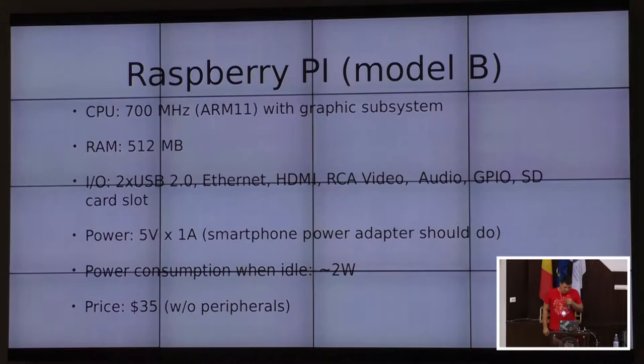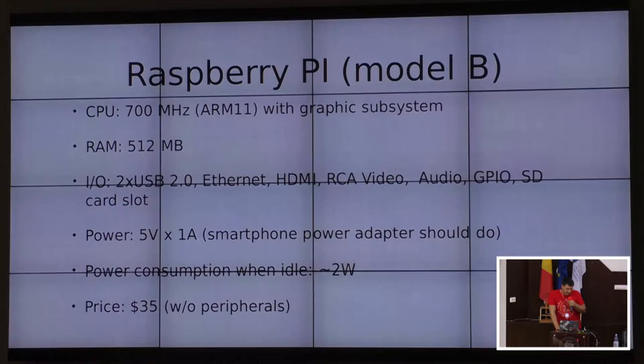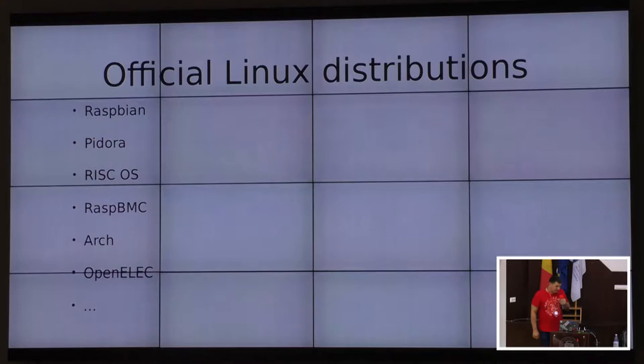So, what is Raspberry Pi? I worked on the Raspberry Pi Model B. Currently there are upgraded versions with better specs. The one I worked on had 700 megahertz of CPU and half a gigabyte of RAM, some I/O ports, and you could power it with a smartphone power adapter.